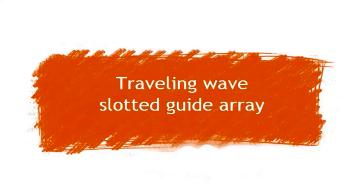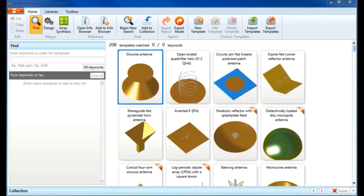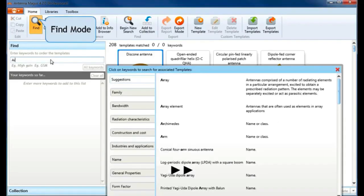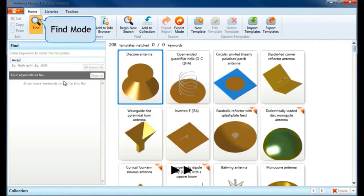I will show you how to design a travelling wave slotted guide array in Antenna Magus. Compared to the resonant wave guide slot array already available in Magus, the travelling wave slotted guide array has some impressive advantages. It can handle higher power and operates over a much wider bandwidth of up to 25%. Let's search for this antenna by entering keywords like 'array' and 'slotted' and see which matched results are returned.